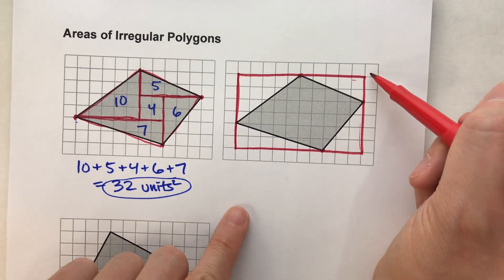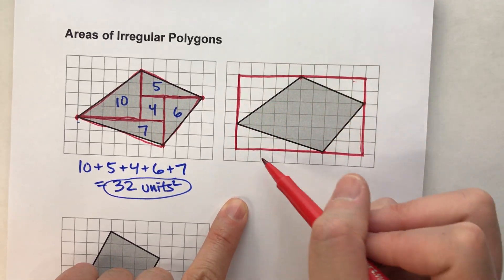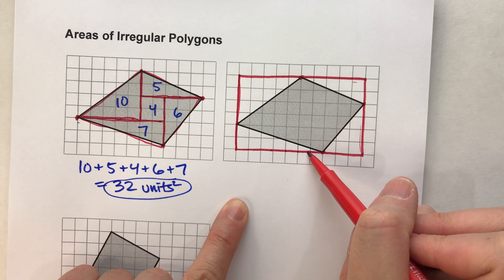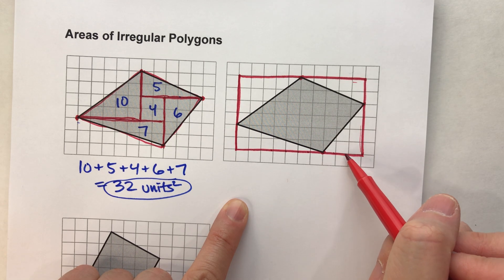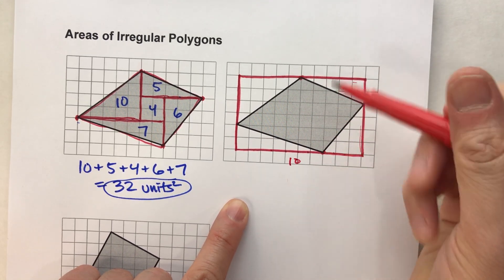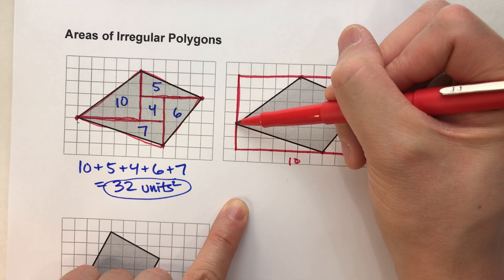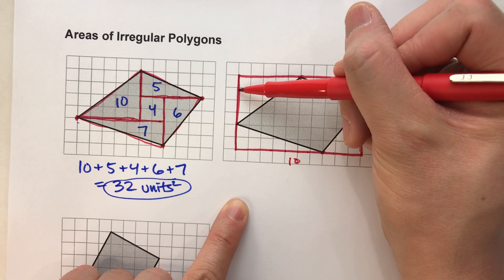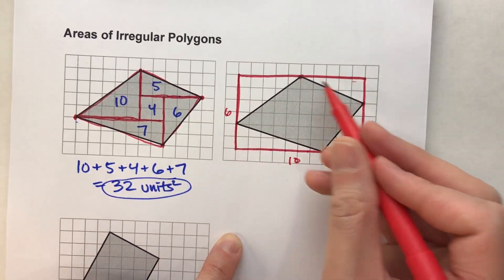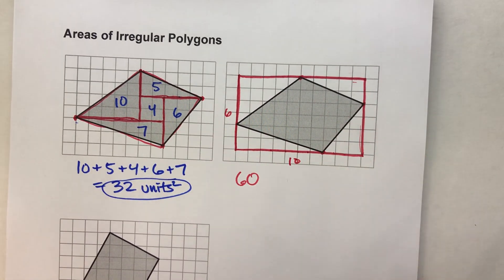So let's find the area of this big rectangle. Length times width: the length is 10 and the width is 6. So the area of the big rectangle is 10 times 6, which is 60.